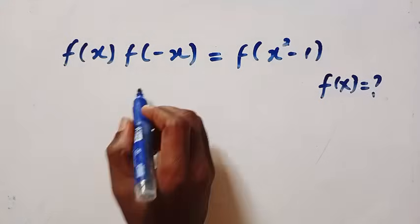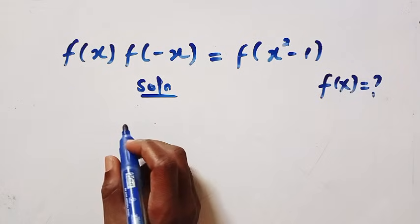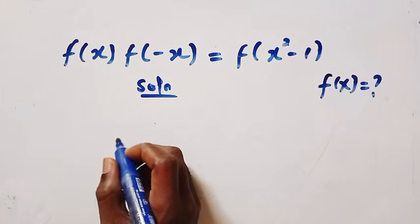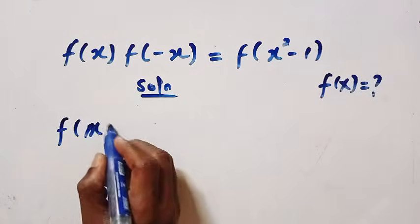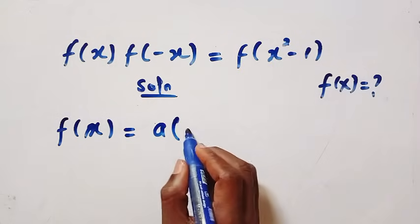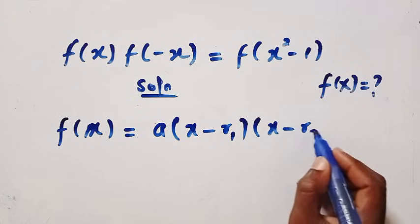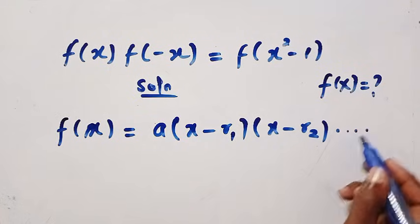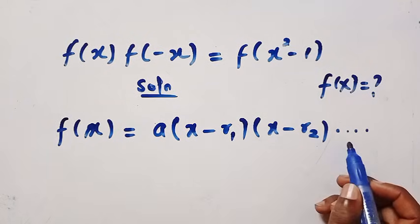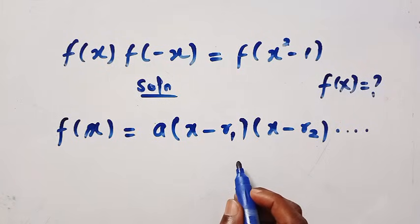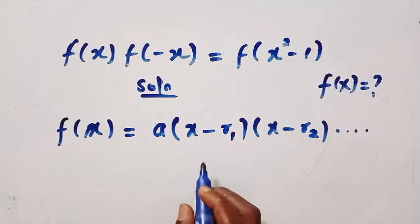In this case, we are going to assume — and this is not just assumption, it is like the fundamental theorem of algebra — so we consider f(x) to be equal to a times the product of (x - r₁)(x - r₂) and so on. Here r₁, r₂, r₃, and so on are the real roots.